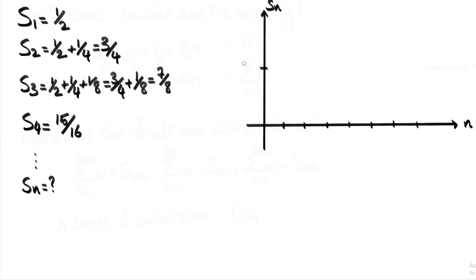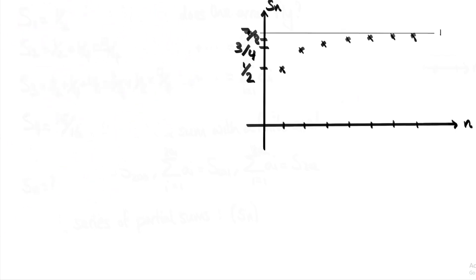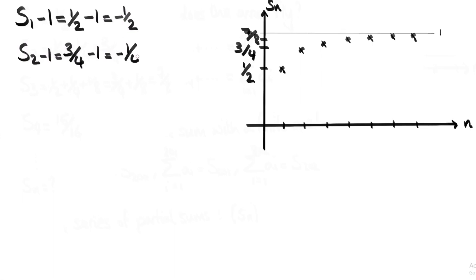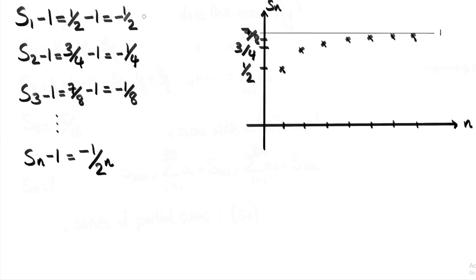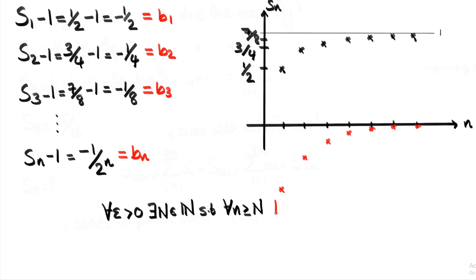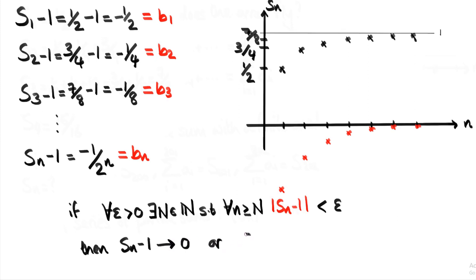Looking at this sequence graphically — S₁ is a half, S₂ three quarters, S₃ seven eighths — this looks like it's converging, but not to zero: to one. We only know how to deal with sequences that converge to zero, so is there a way of converting this sequence into one that converges to zero? What if we subtract one from every term? Then a half minus one is minus a half, three quarters minus one is minus a quarter, seven eighths minus one is minus one over eight. This sequence is just b — which is the negative of a, our original sequence. And we know that b converges. Writing down the condition for b's convergence: bₙ converges to zero, and we've seen that Sₙ minus one equals bₙ. Replacing bₙ with Sₙ minus one tells us that the sequence Sₙ minus one converges to zero, or equivalently, the sequence Sₙ converges to one.